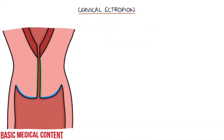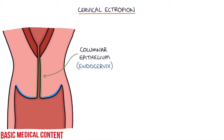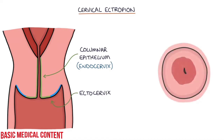Cervical ectropion occurs when the columnar epithelium of the endocervix, which is the canal of the cervix, has extended out to the ectocervix, which is the outer area of the cervix that you can see on a speculum examination. This means the lining of the endocervix becomes visible on examination of the cervix using a speculum.